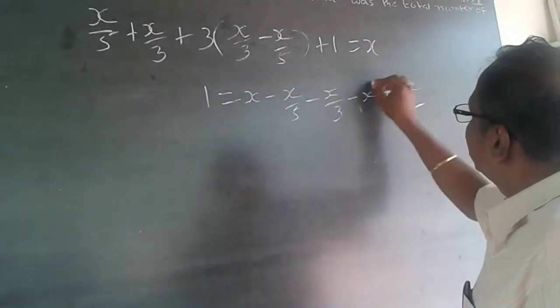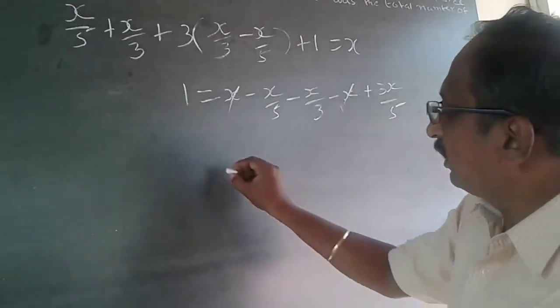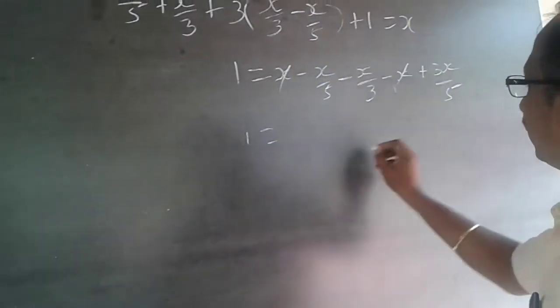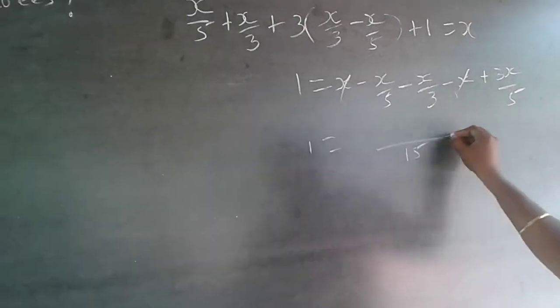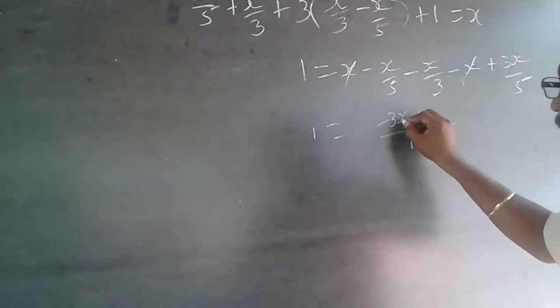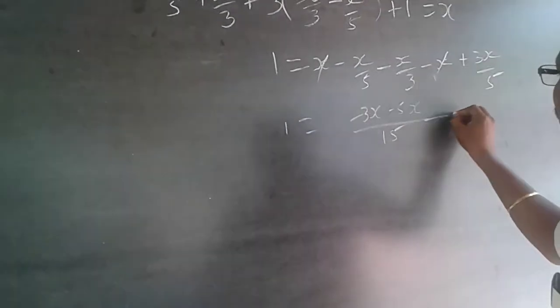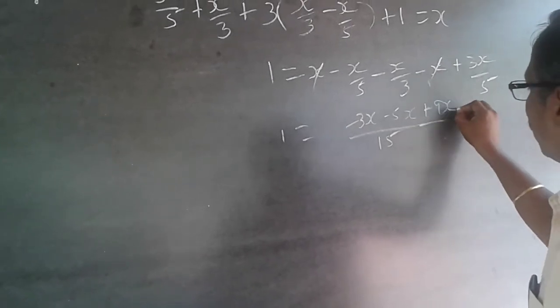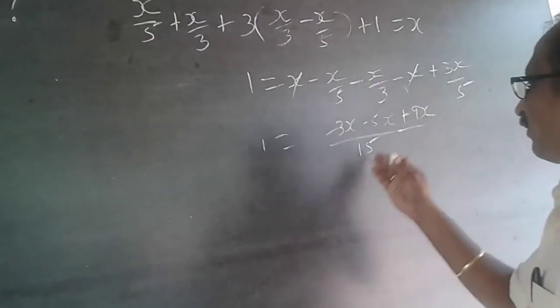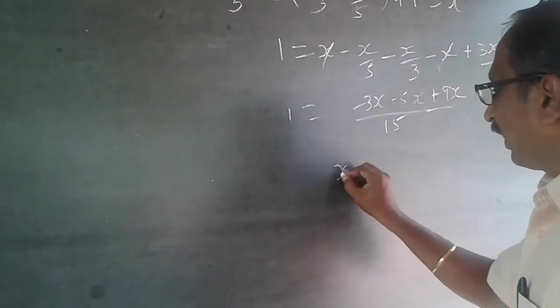Now take LCM 15: one equals (15x - 3x - 5x + 9x)/15. So x/15 equals 1, or x equals 15. The answer is 15.